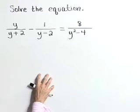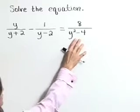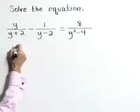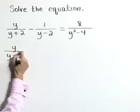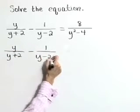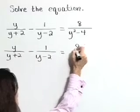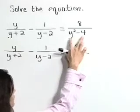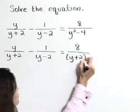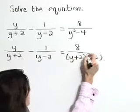Let's start by factoring this denominator right here. So let's write a step: y over y plus 2, minus 1 over y minus 2, is equal to 8 over—that's a difference of squares and it factors as y plus 2 times y minus 2.